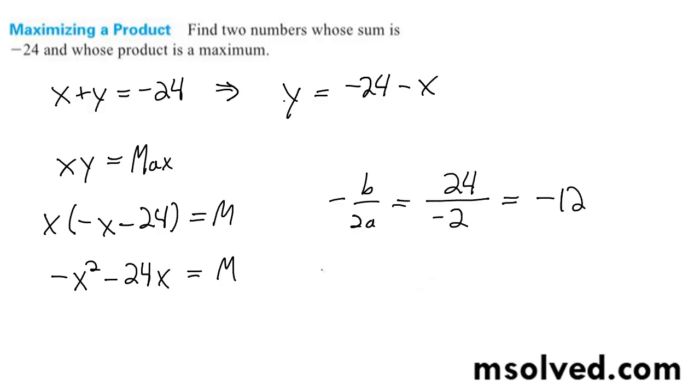This is for x. So because x plus y is negative 24, and x is equal to negative 12, then y is equal to negative 12. And that's it.